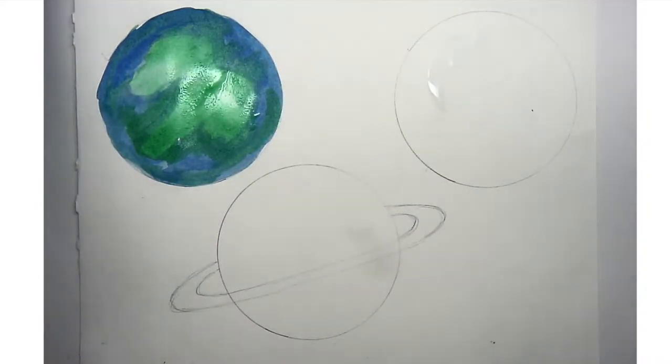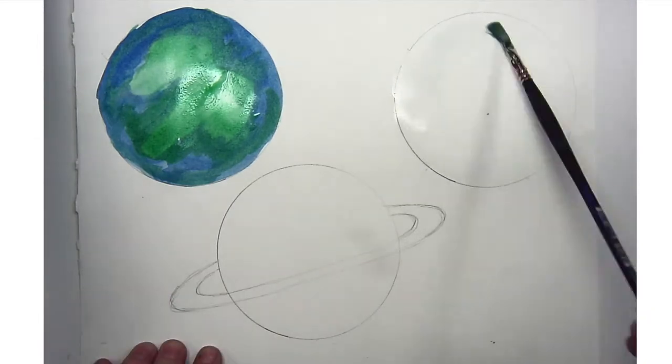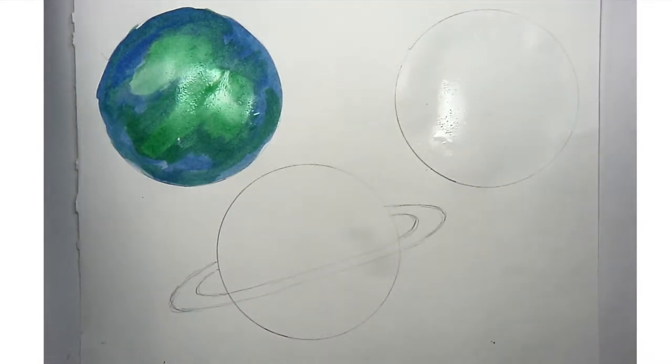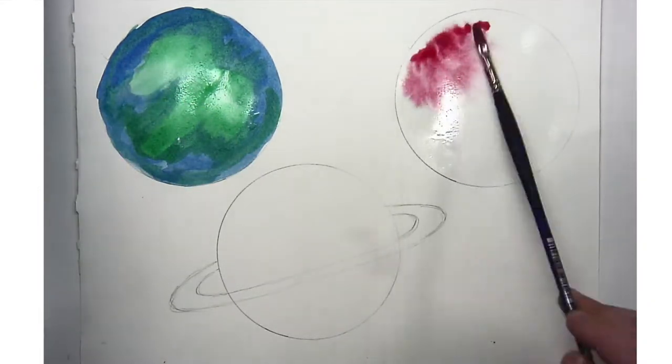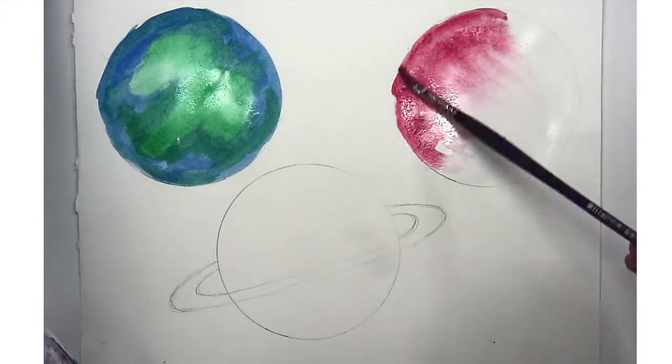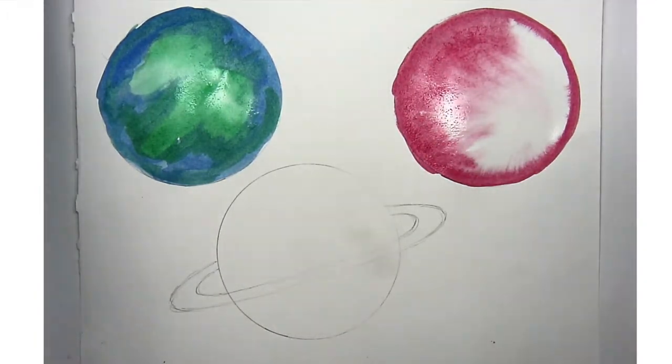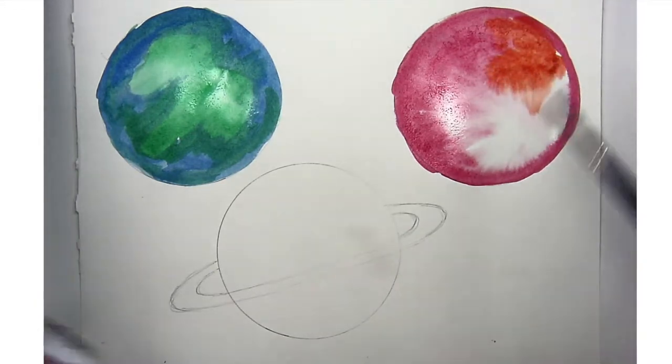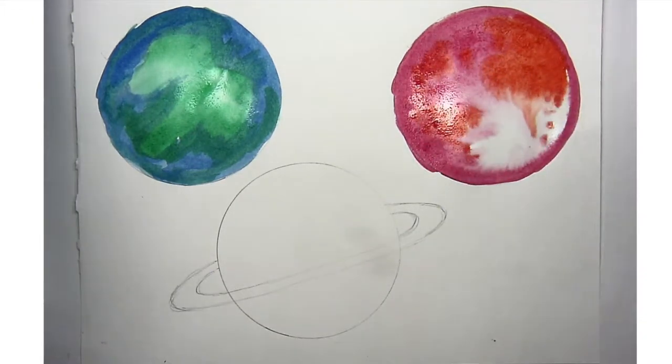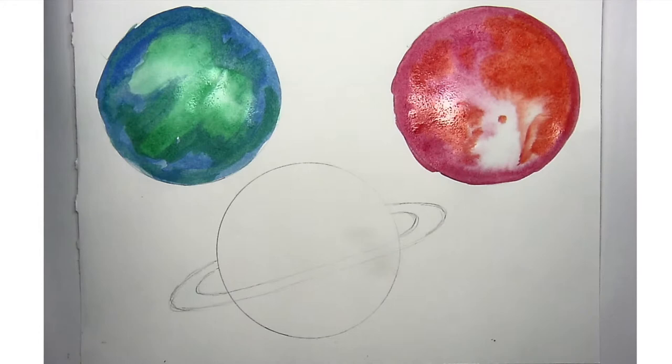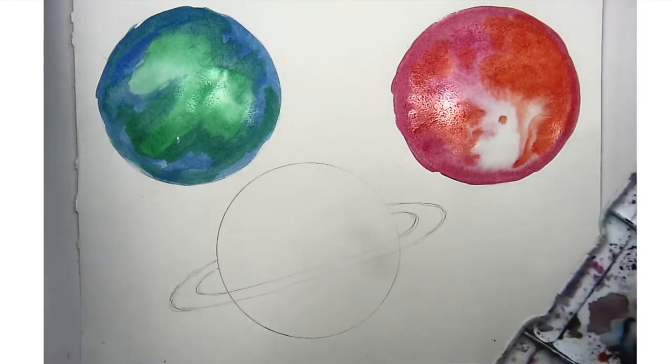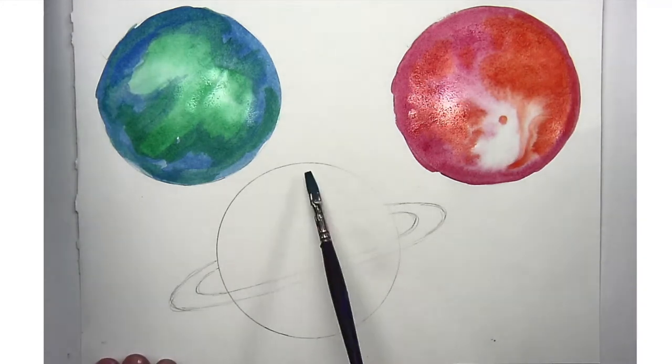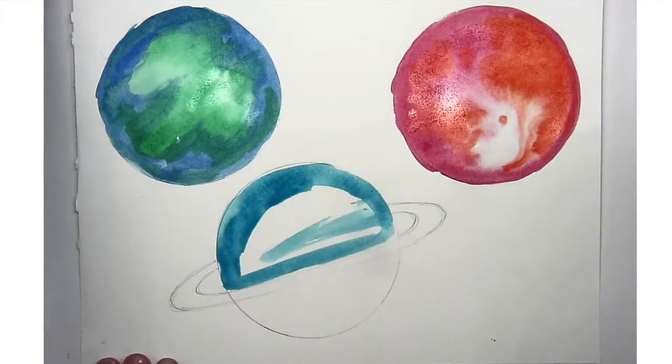And then I just went over the areas where I wanted to add some more color. The second planet, I'm doing another wet-in-wet. So I painted it with clear water. And now I'm just adding in some of my red watercolor. And you can see that sort of just spreads on its own. And I decided to go in and add some orange. Again, it's just spreading and moving. And there's some white areas that's left, but I kind of liked it. So I just left it as is.